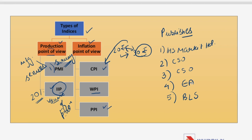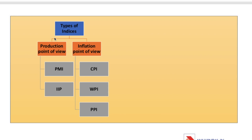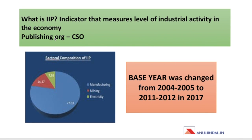Now let's understand IIP in more detail. IIP is the indicator that measures the level of industrial activity. It takes into consideration the volume of production in the economy, and it is published by CSO — the Central Statistical Organization. The next concept is the sectoral composition of IIP, from which this question has been asked.